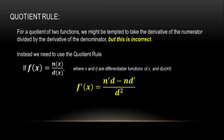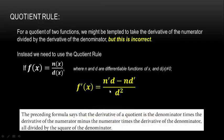An important warning: our brains naturally look for patterns, and when we take the derivative of a sum we take the derivative of each part. So it's tempting to just take the derivative of the numerator and the derivative of the denominator separately — but that does NOT work. You must use the quotient rule formula: denominator times derivative of numerator, minus numerator times derivative of denominator, all divided by denominator squared.